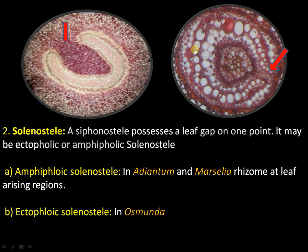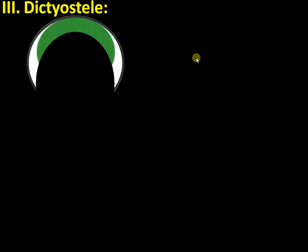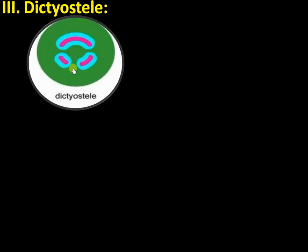In the amphiphloic type, the xylem is surrounded on both sides by phloem. The third type of stele is the dictyostele. In the dictyostele, the vasculature is further broken up into small fragments, each one called a meristele.